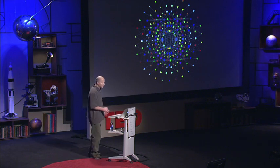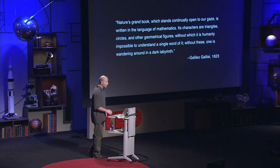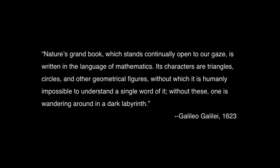This idea that nature is described by mathematics is not at all new. In 1623, Galileo wrote this. Nature's grand book, which stands continually open to our gaze, is written in the language of mathematics. Its characters are triangles, circles, and other geometrical figures, without which it is humanly impossible to understand a single word of it. Without these, one is wandering around in a dark labyrinth.